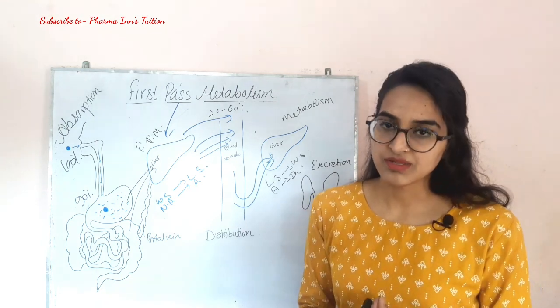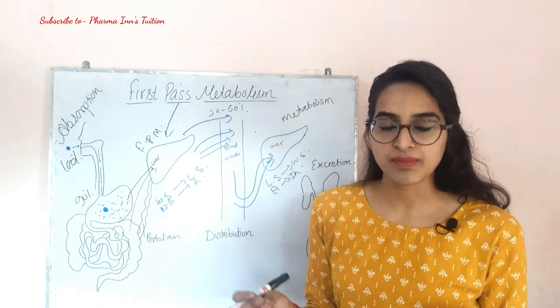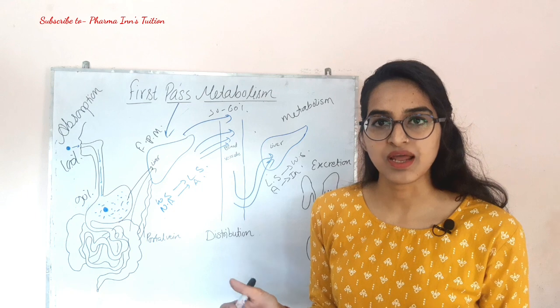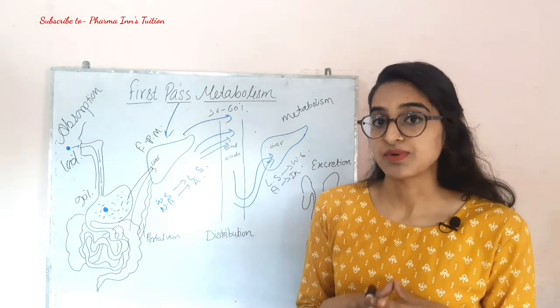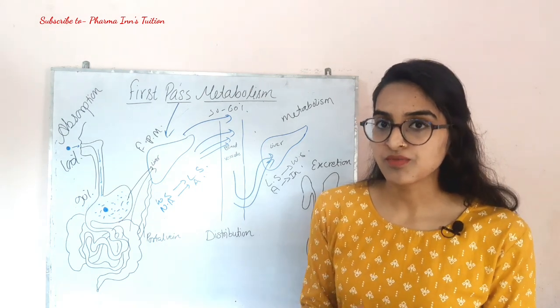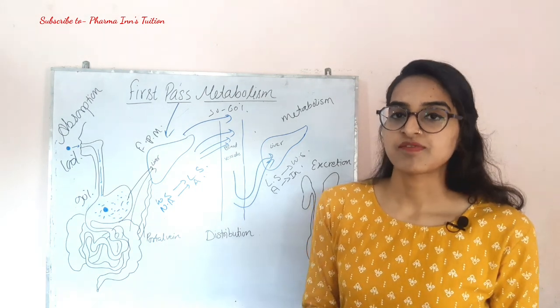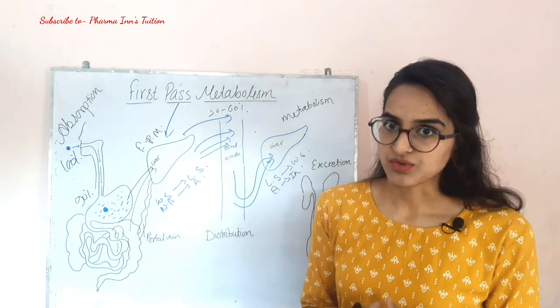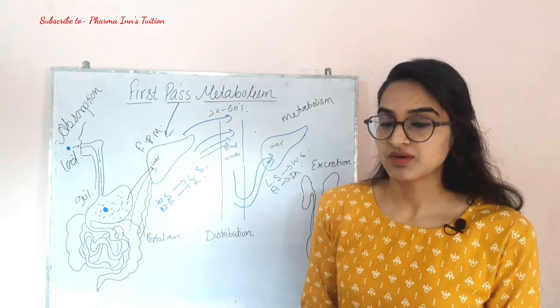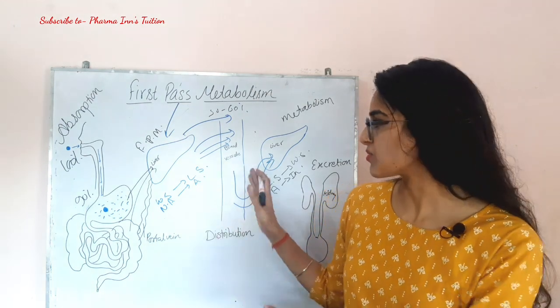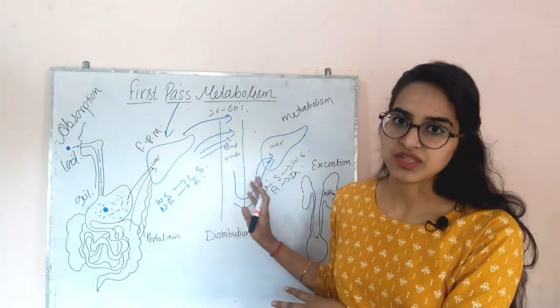Mainly, our tolbutamide drug and benzodiazepines are very less metabolized by first-pass metabolism, so their concentration remains very high in our blood after oral administration.